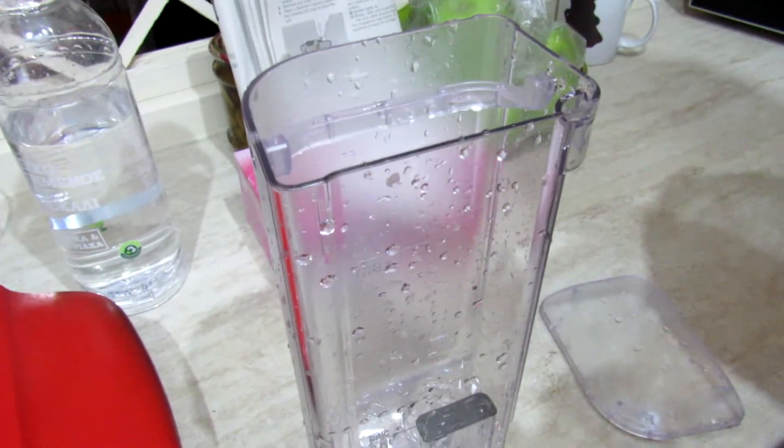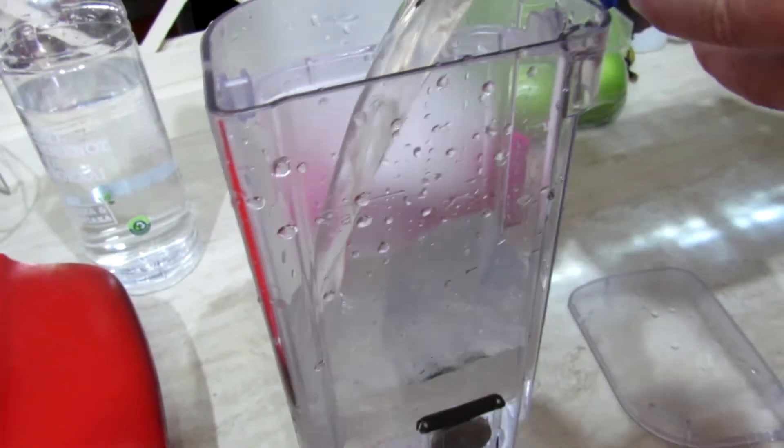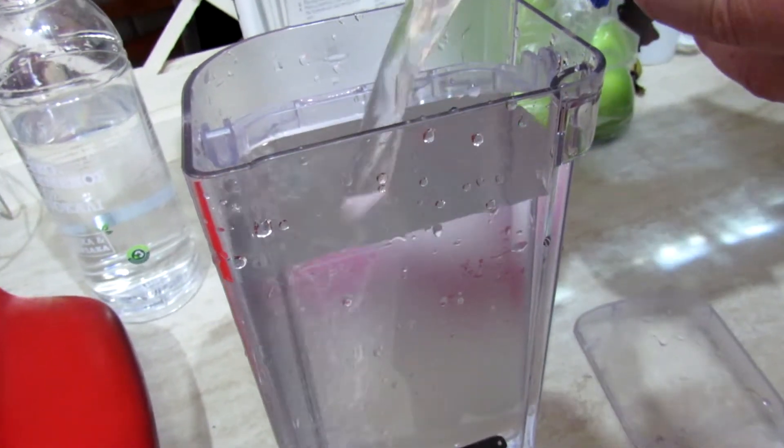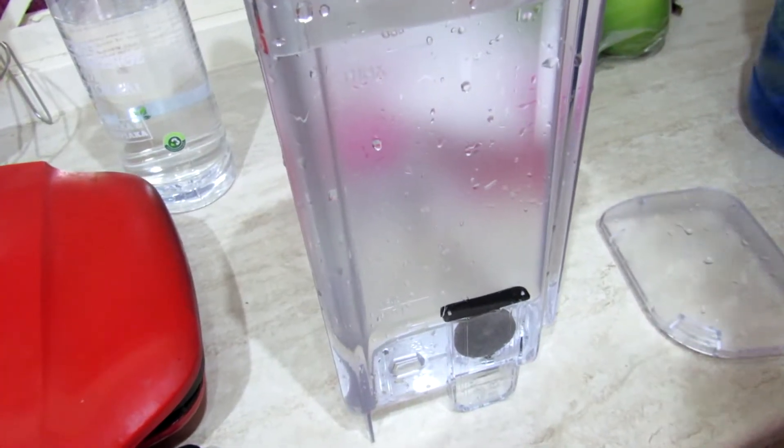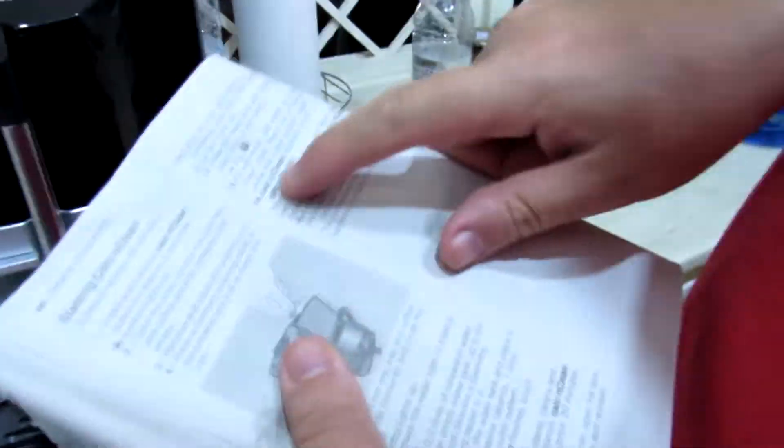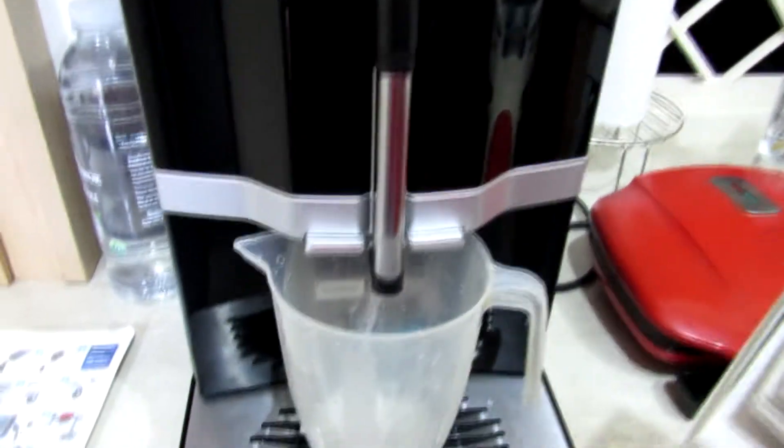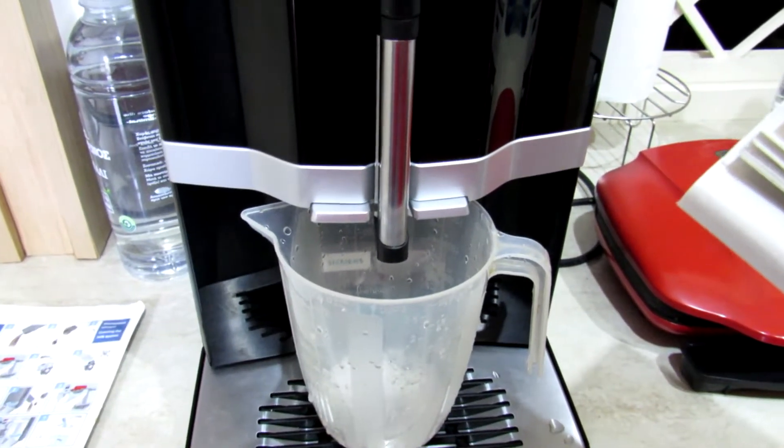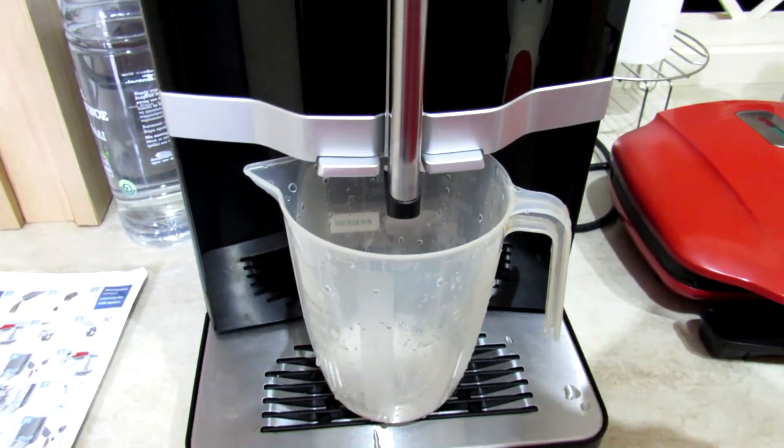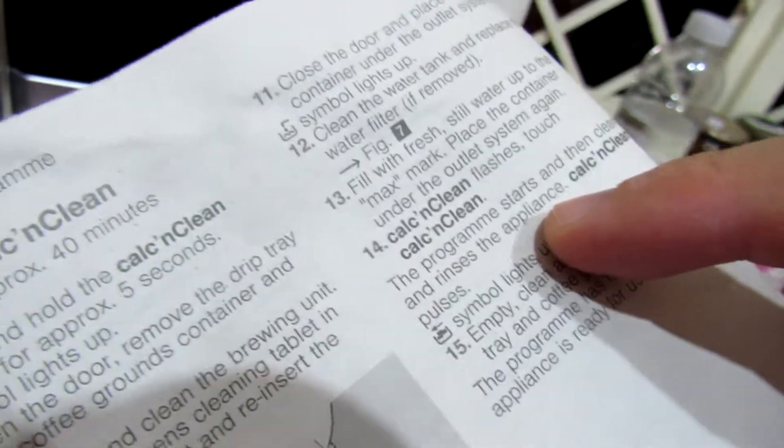Stage 13: Fill the fresh still water to the max mark. This water is from the osmosis filter. Stage 14: Calc and clean flashes, touch calc and clean. The program starts and then cleans and descales the appliance. Calc and clean pulses.